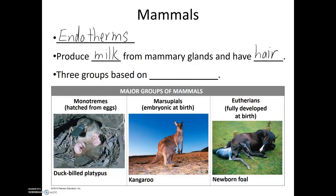These three groups vary from each other based on their pregnancy. The monotremes are egg-laying mammals. This includes the duck-billed platypus and the echidna, or spiny anteater. The marsupials are pouched mammals, meaning that embryonic development happens for a very short period of time within the mother's reproductive system, and then after the young are born, they travel into the mother's pouch, where more significant development occurs.